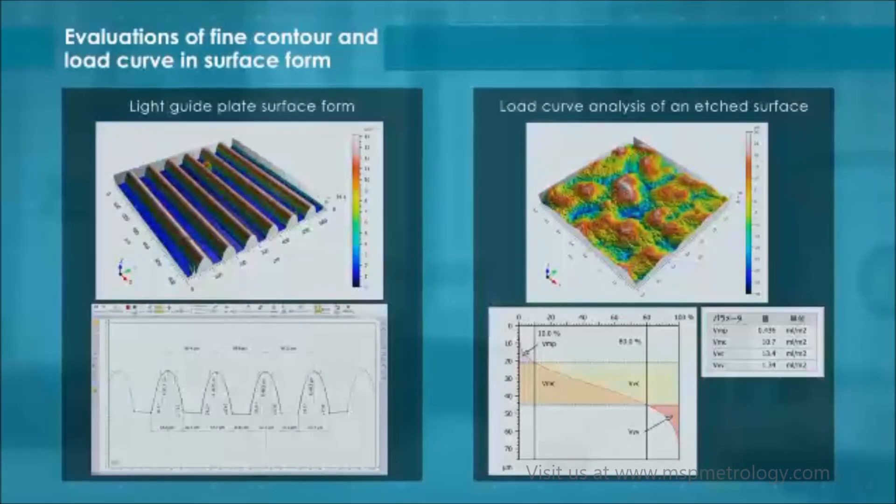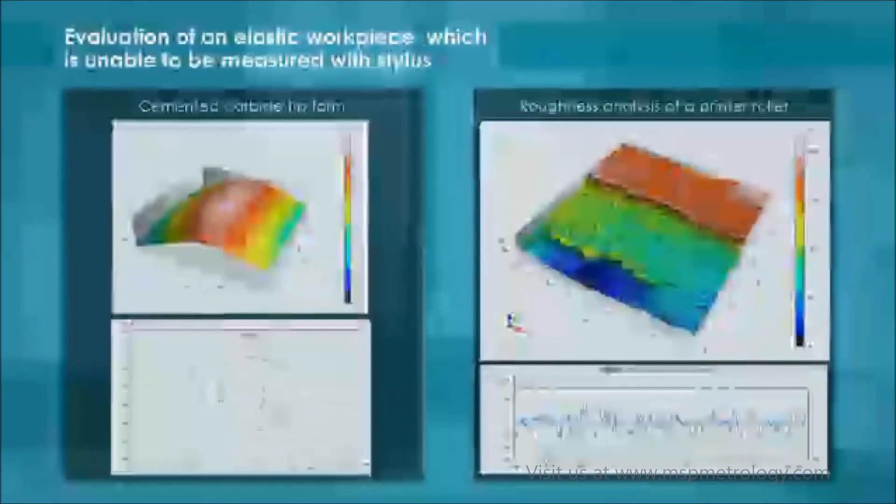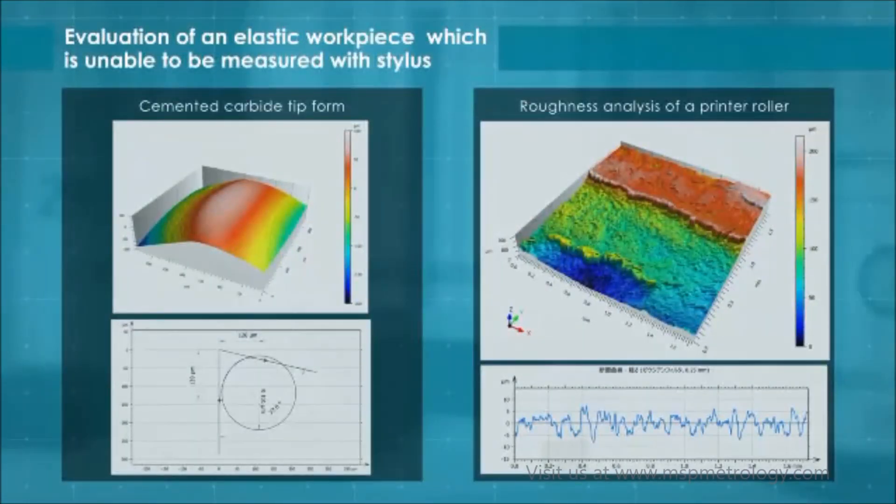Form evaluation of a light guide plate surface where the conventional stylus cannot be used, and load analysis on a randomly etched surface can also be performed. Non-contact measurement can be used for various purposes, such as the evaluation of the blade edge form of a cemented carbide tip for which physical measurement cannot be performed, and the evaluation and analysis of elastic workpieces such as printer rollers.